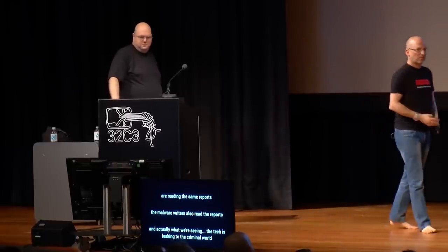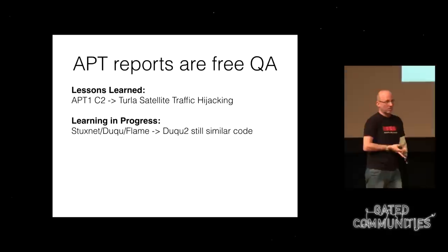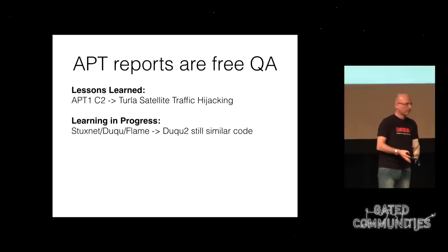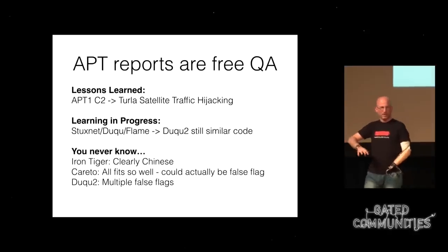That makes APT reports actually free QA for the attackers. You can see lessons learned: APT1's C2 infrastructure had large parts registered with the same name and email address — you might remember uglygorrilla@163.com. But the Turla malware used very sophisticated satellite downlink hijacking through ISP to inject packets receivable without exposing the destination location. Then there's learning in progress: Stuxnet, Duqu, and Flame all share the same code, and Duqu 2 is still using large parts of that framework.